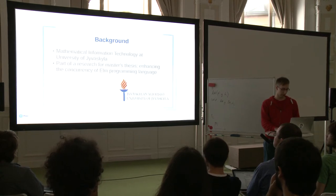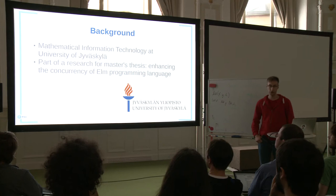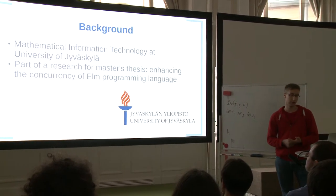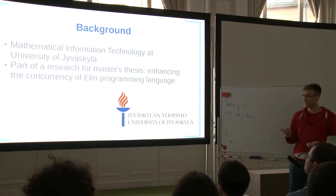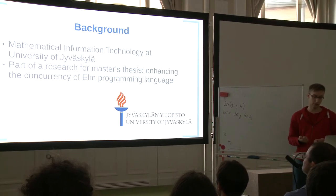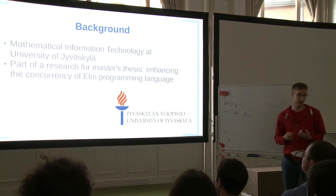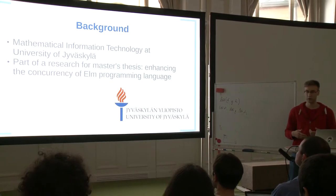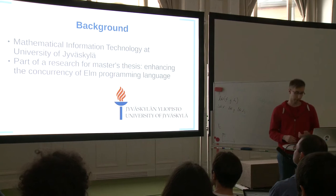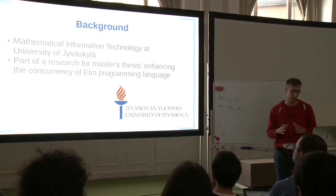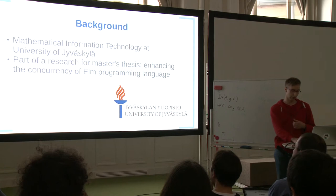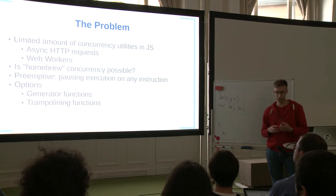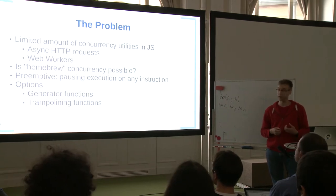Let's look at a bit of background. I'm a student at the Mathematical Information Technology department at the University of Jyväskylä. This is part of my research for my master's thesis called 'Enhancing the Concurrency of an Empowerment Language,' which also covers the web worker approach. Today I'll focus on two different options for solving the concurrency problem: generators and trampolines.